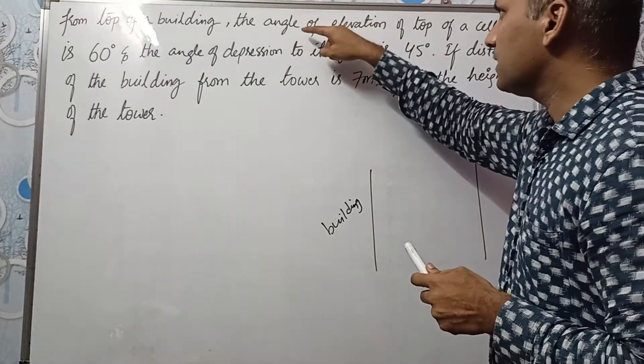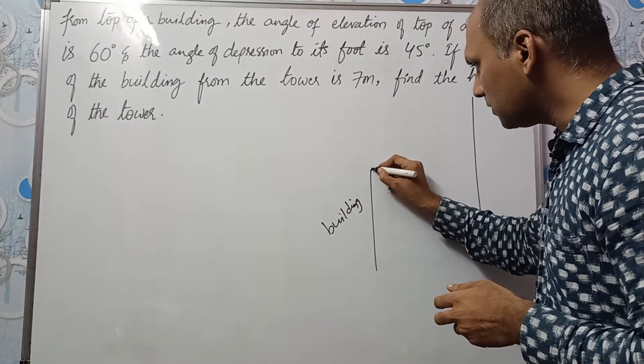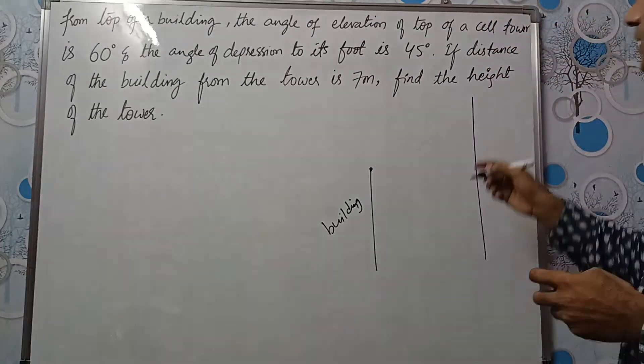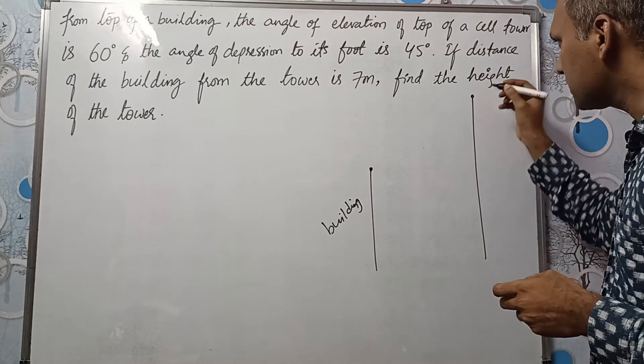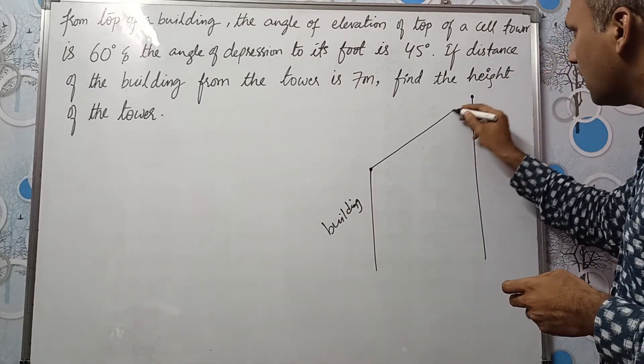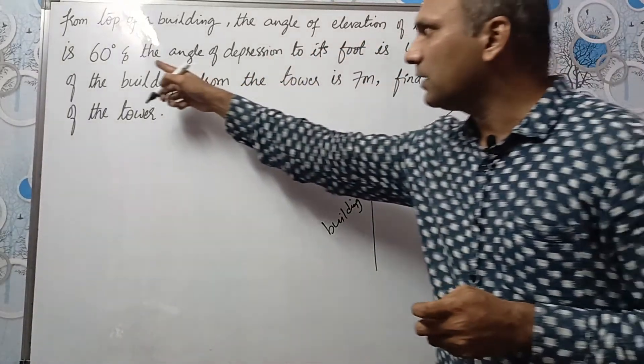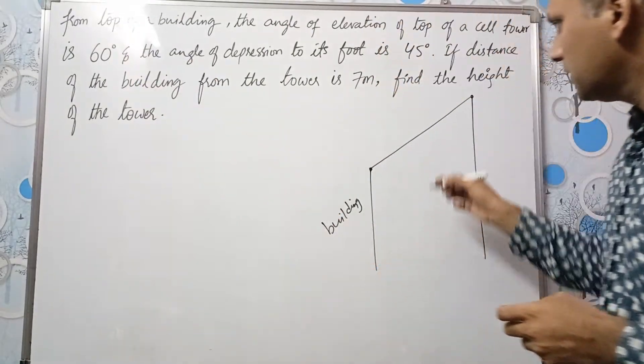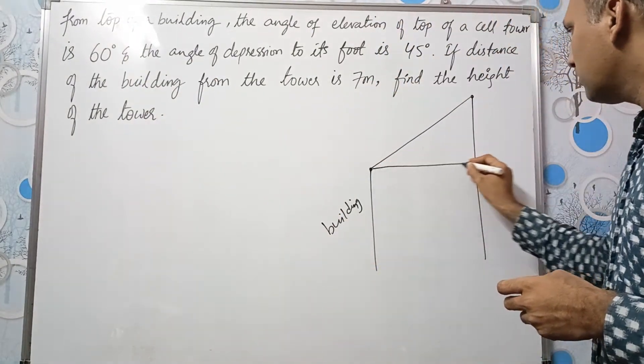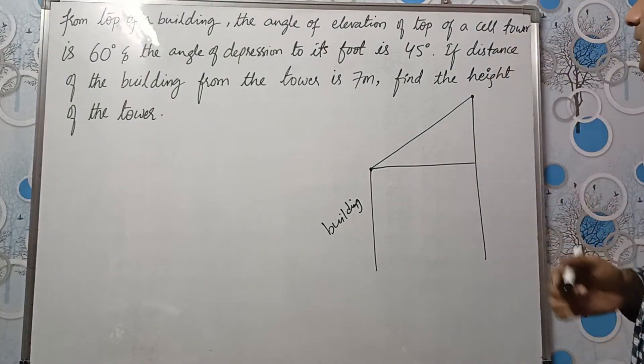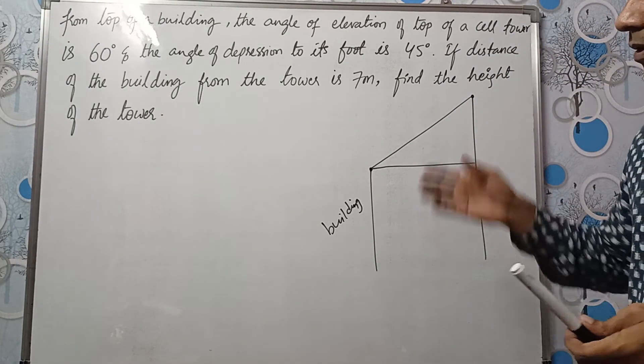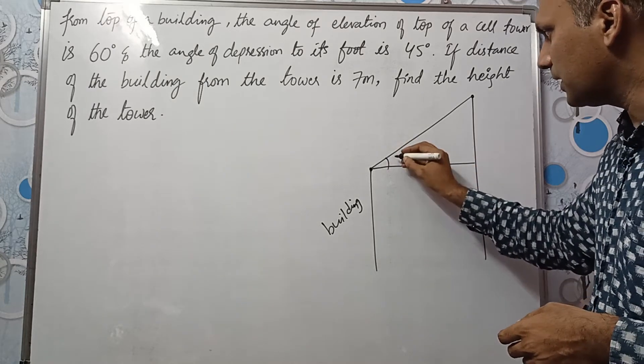See it is given that from top of a building, you are standing on top of a building and the angle of elevation of top of a cell tower. This is the top of a cell tower and you are seeing up. Only then the angle of elevation will be formed, isn't it? So that way we can say building is smaller or tower is taller than building.